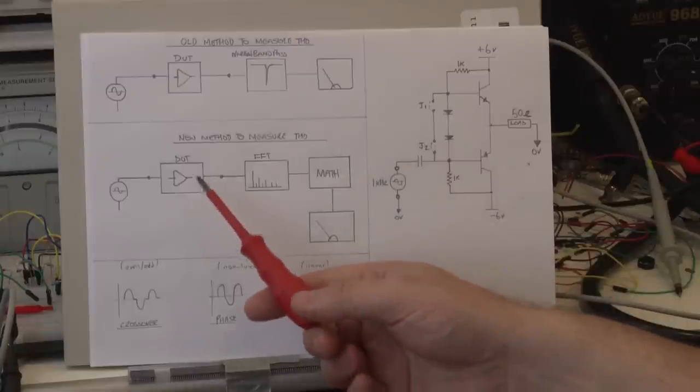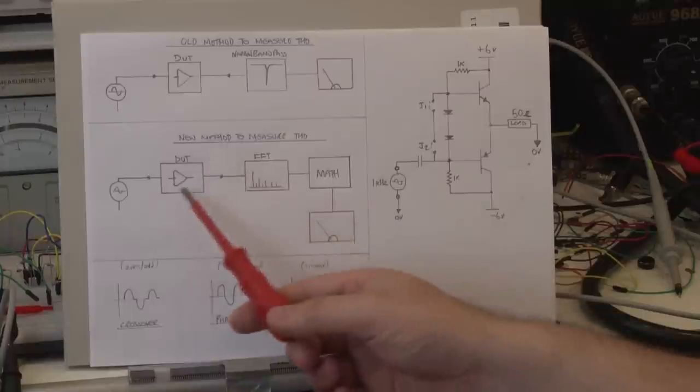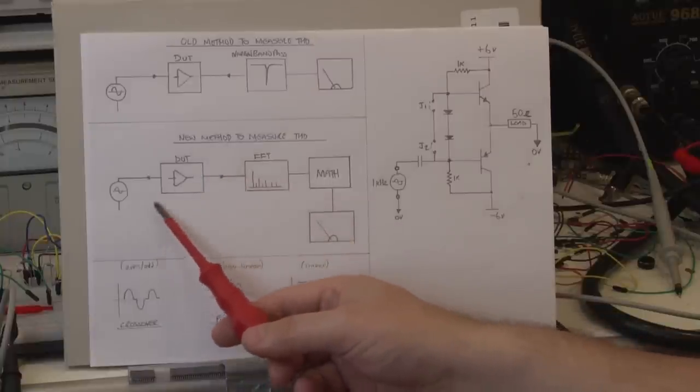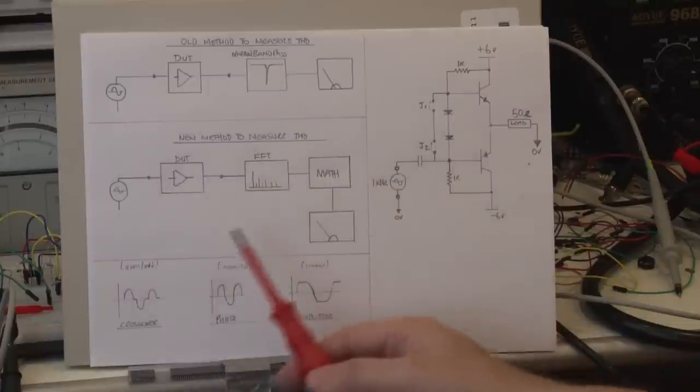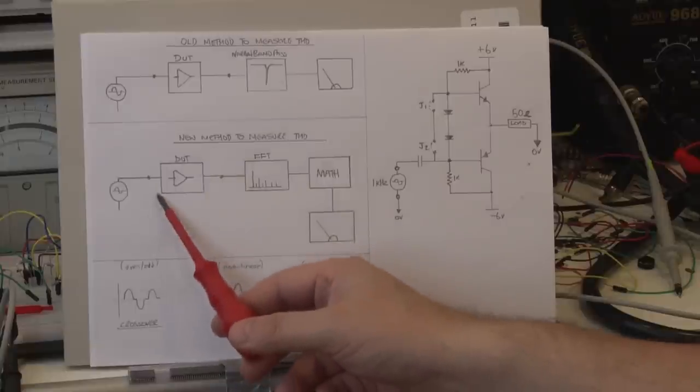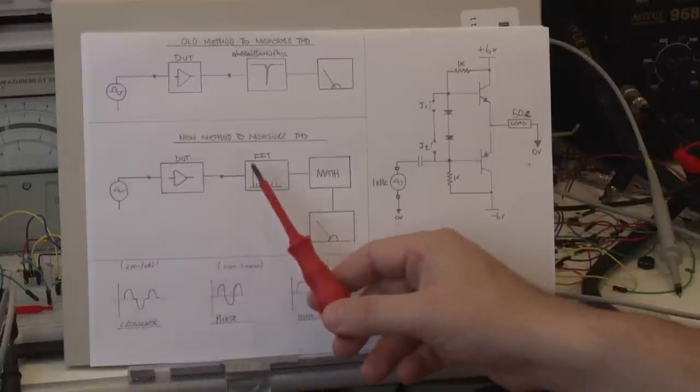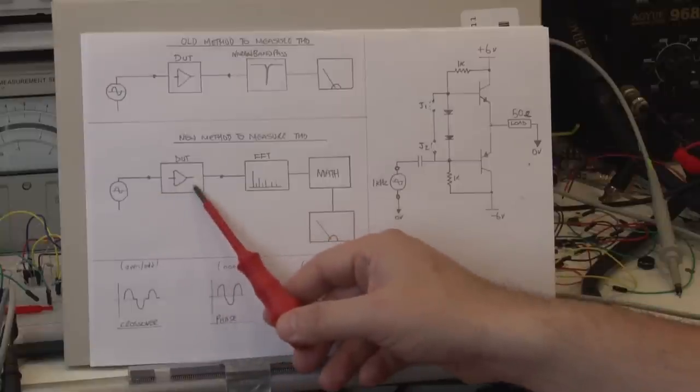In more modern equipment, there's obviously numerous ways of doing this, and again, this is very simple terms. So if anyone's going to call me out here, please understand, this is just a basic explanation. In modern systems, what tends to happen is, again, you've got the same signal source, it goes through a device under test.